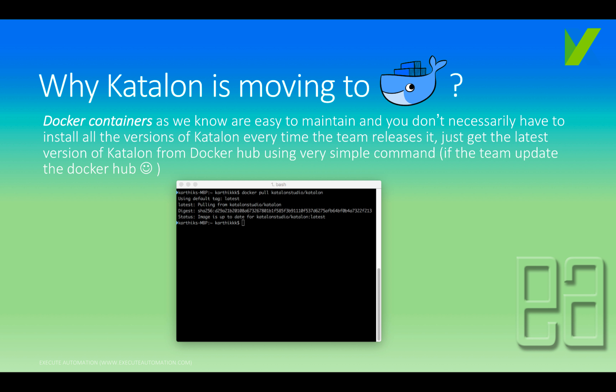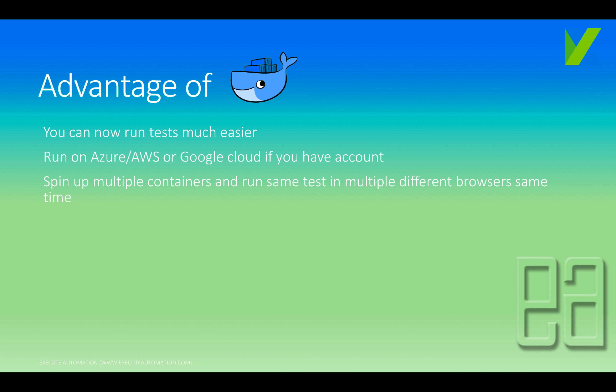That's really cool. The image is hosted on Docker Hub. Beyond getting the latest version easily, another advantage is you can run tests much more easily using a simple shell script command. You can run the same container on Azure, Amazon Web Services, or Google Cloud, and spin up multiple containers to run the same test in multiple different browsers at the same time.